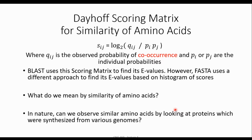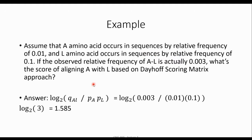In nature, can we observe similar amino acids by looking at proteins synthesized from various genomes? Yes, of course. But for different databases, if they have more information about different genomes or different domains, the E-value you receive will be bigger, because it shows how many similar random alignments can produce the same sequence. When your database is bigger, that number is bigger too. However, if you have more data, your E-value is more trustworthy compared to other databases.